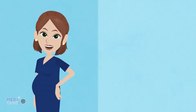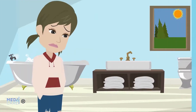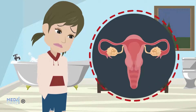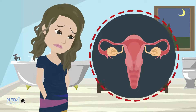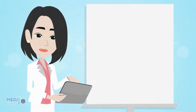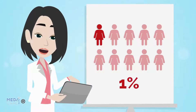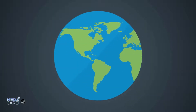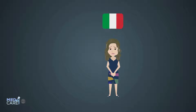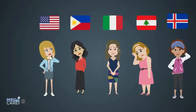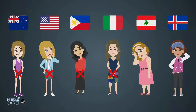Amenorrhea occurs physiologically during pregnancy and during breastfeeding, but in some women it can also persist throughout their fertile life. In the second case, the estimated incidence is 1% of the general population. It is also useful to underline that from an epidemiological point of view, no particular differences were found in the appearance of amenorrhea in women belonging to different ethnic groups.